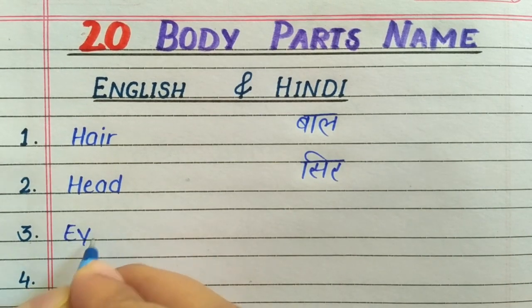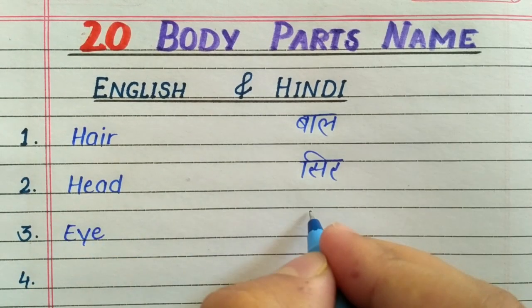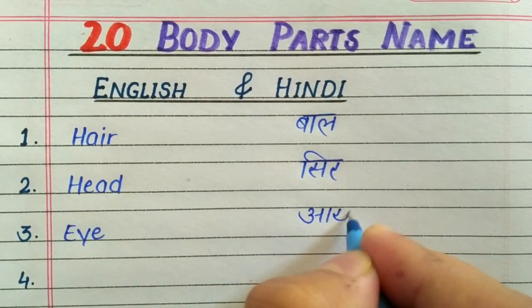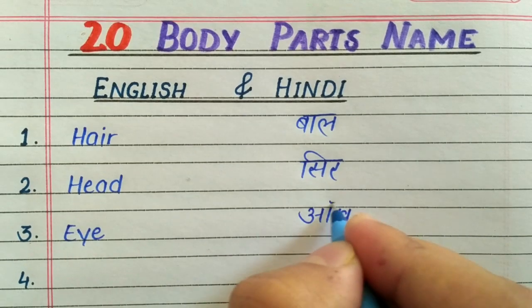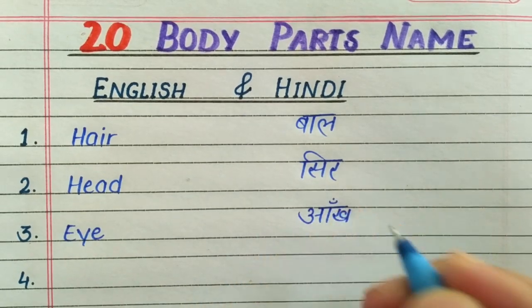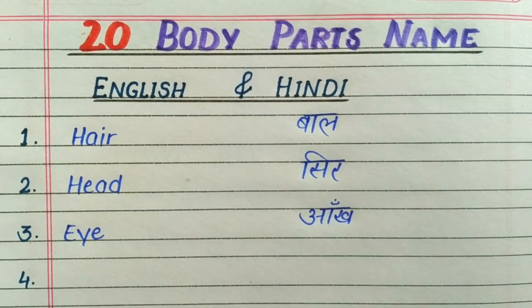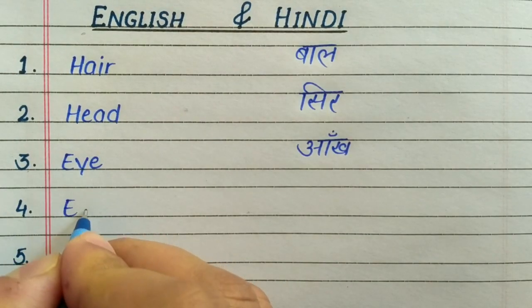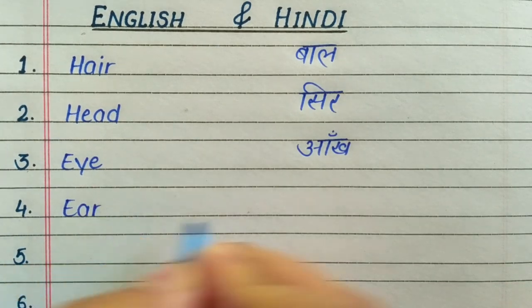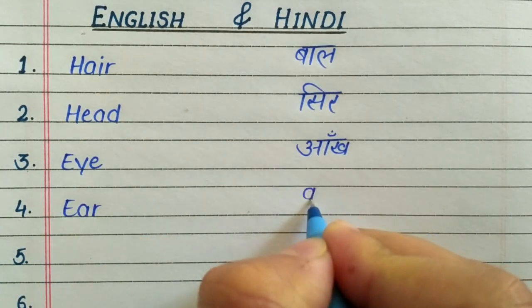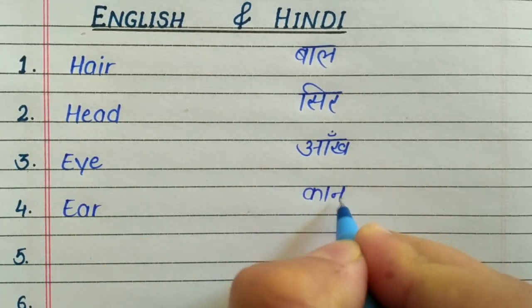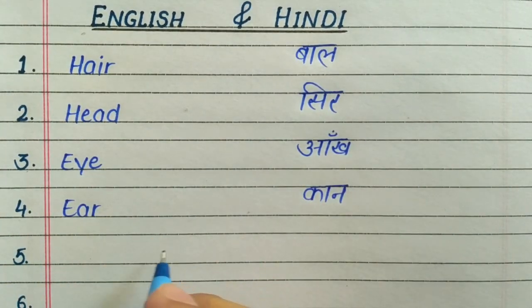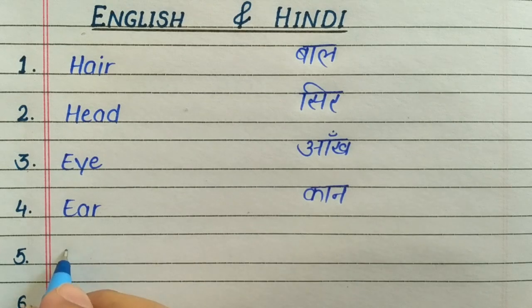Third, E-Y-E, Eye. Eye means Aak. Fourth, E-A-R, Ear. Ear means Kaan.